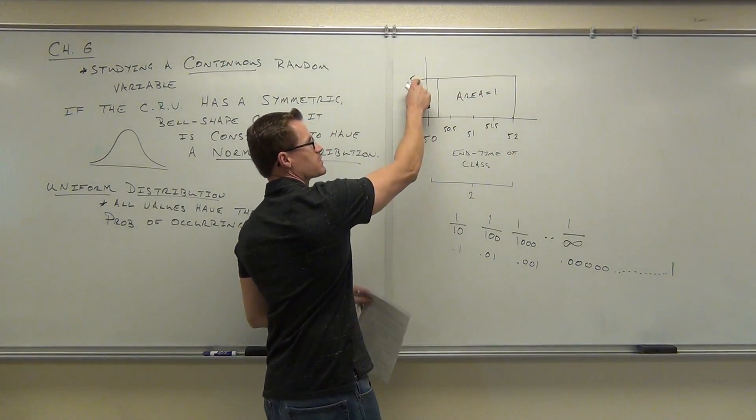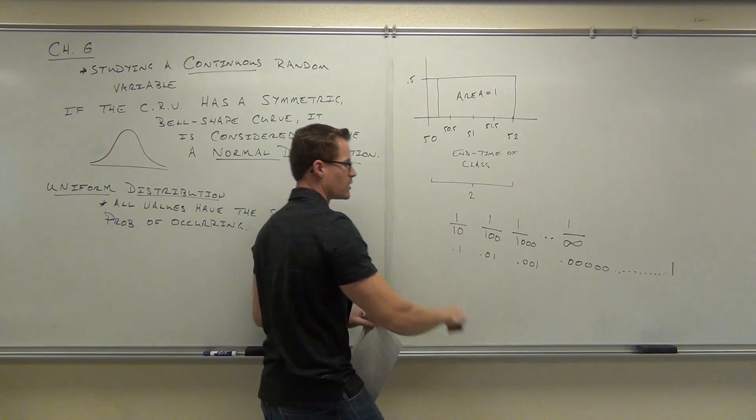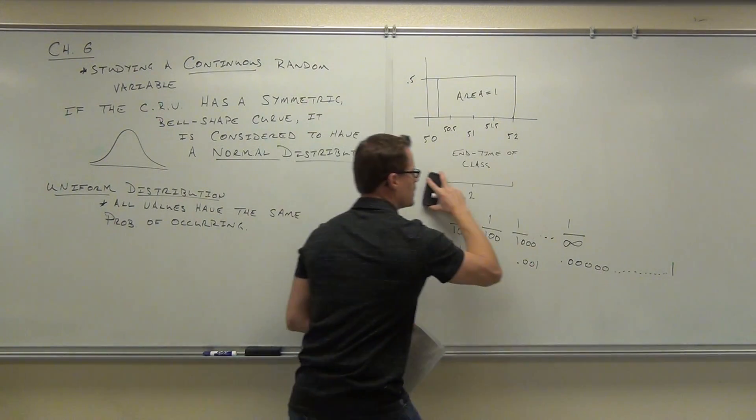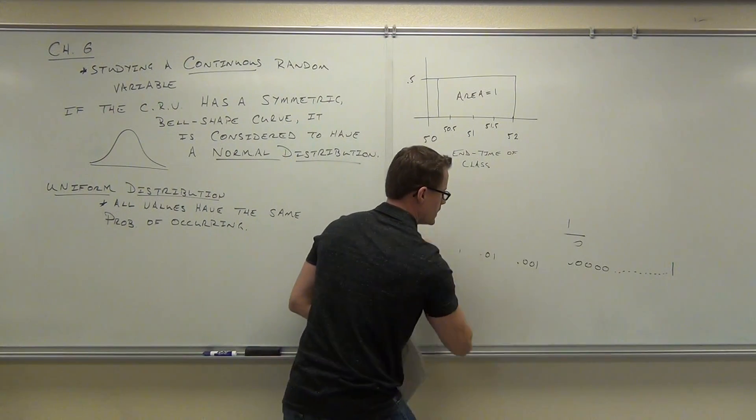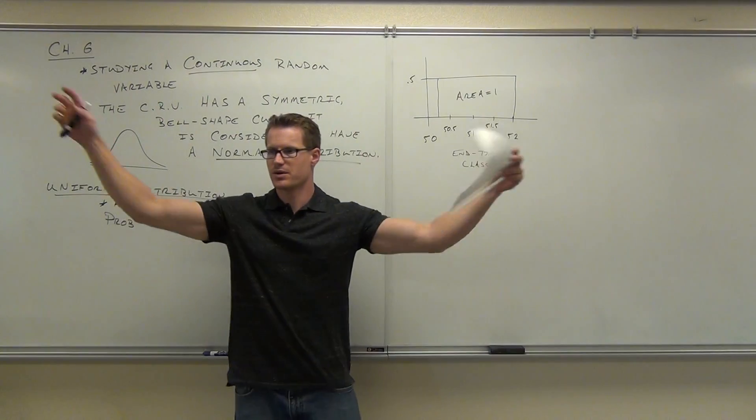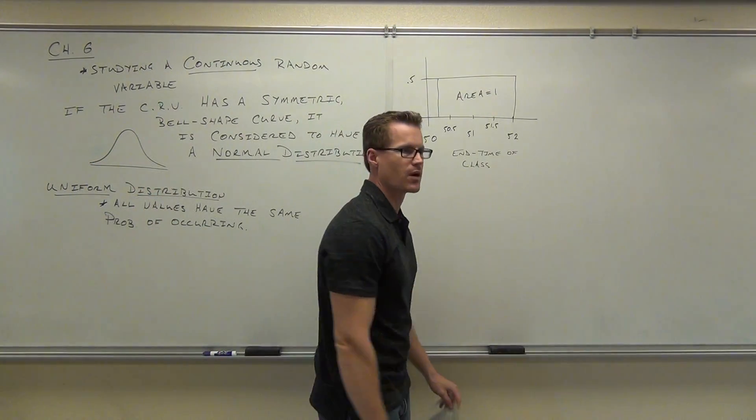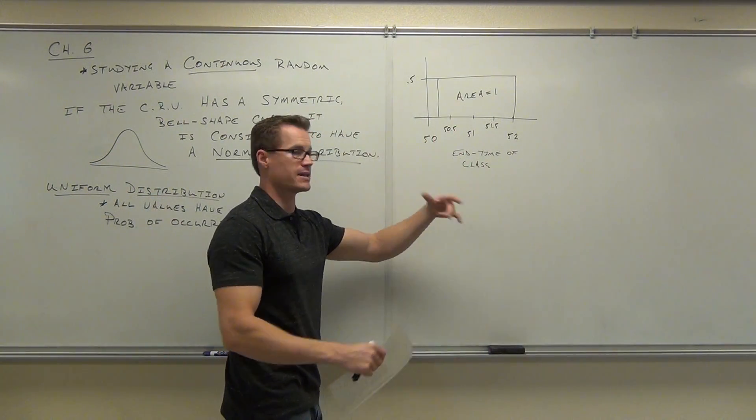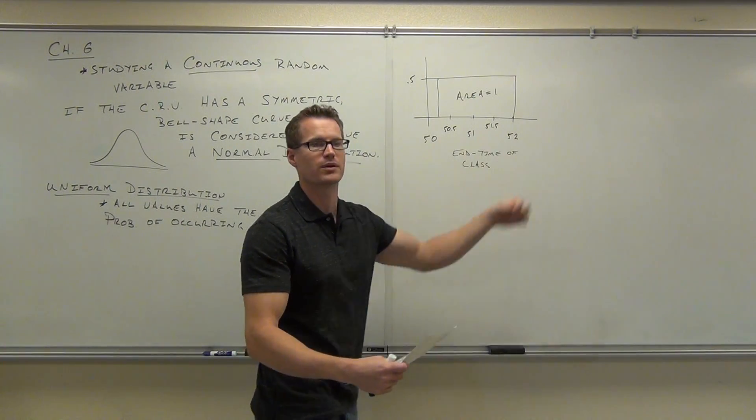So this number comes because we're forcing the area to be 1, our width is 2, our area is 1. We can't find the probability of any specific given number, because that's like finding a needle in a haystack bigger than the universe. It's not going to happen. It's 1 divided by infinity. You cannot do that. It's 0. There's no probability in that.